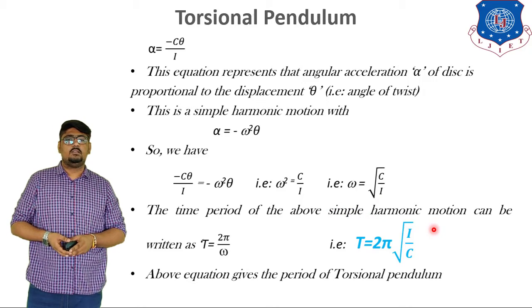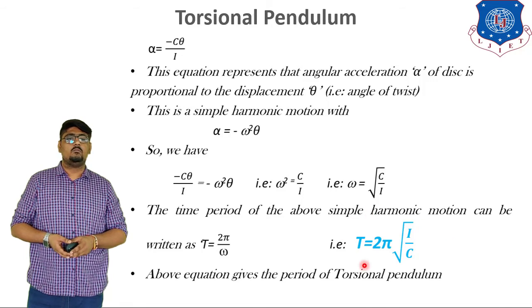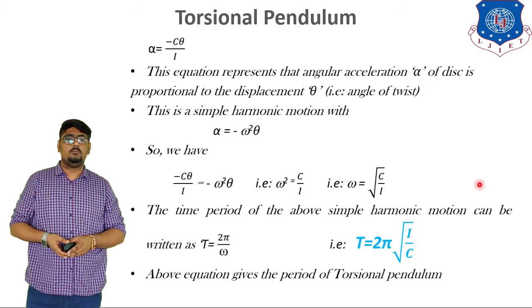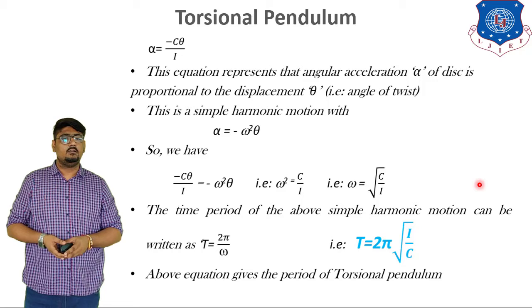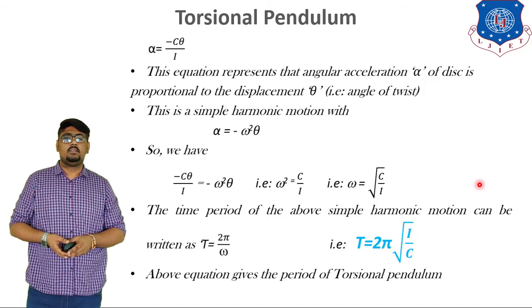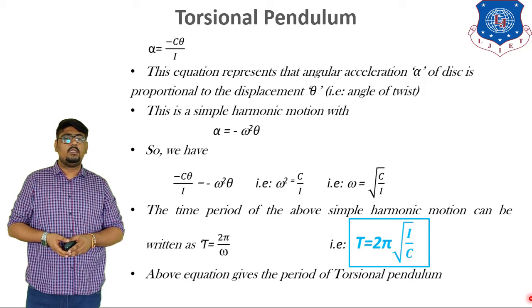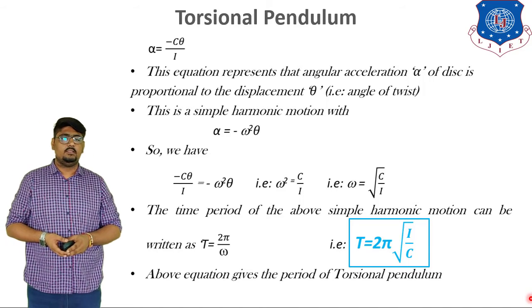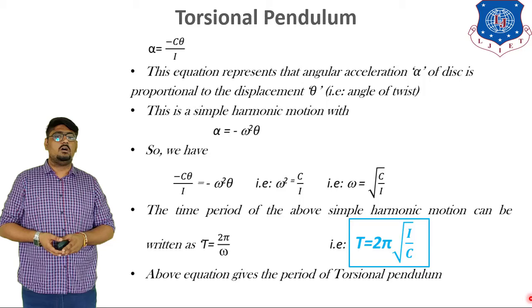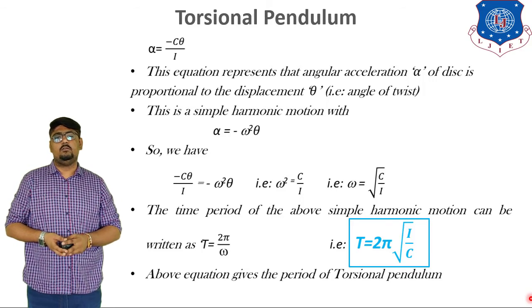This is nothing but the time period of the above simple harmonic motion. This equation can be written as T is equal to 2 pi over omega. So, substituting T, we get T is equal to 2 pi into under root I by C, placing the value of omega in this equation. So, the above equation gives the time period of the torsional pendulum.